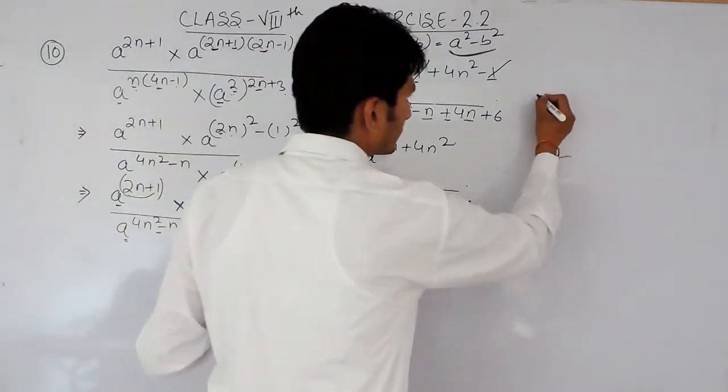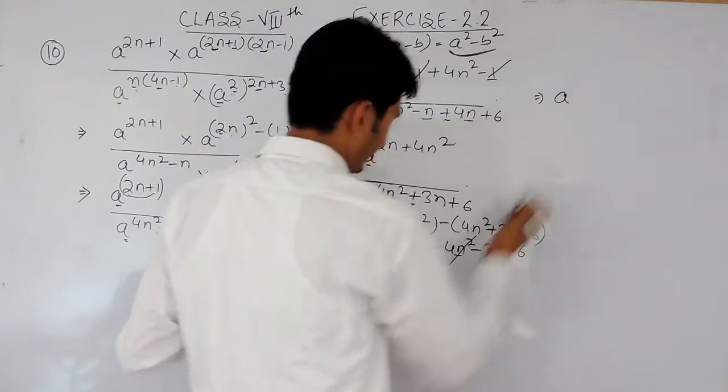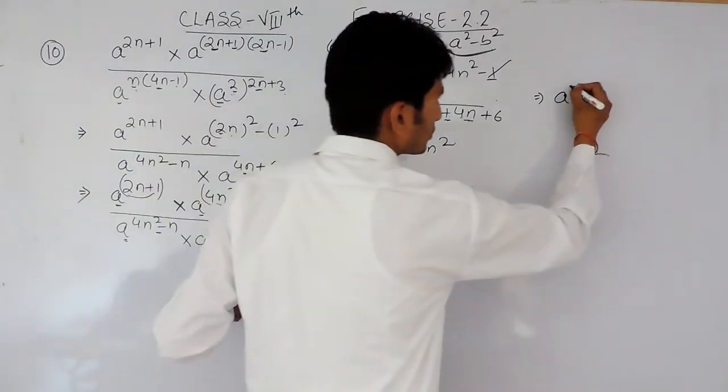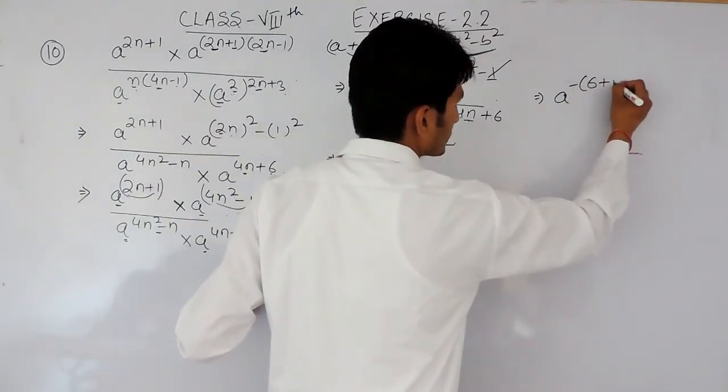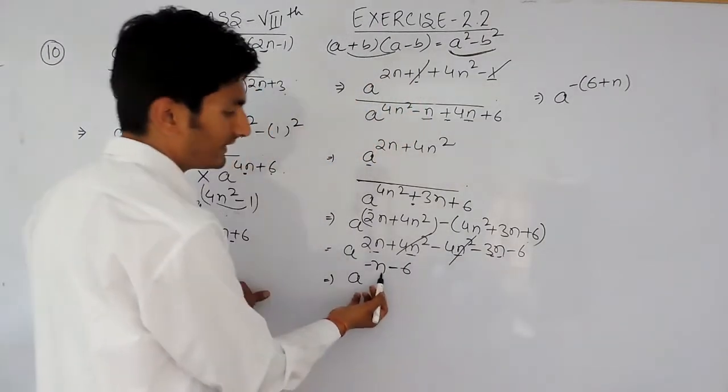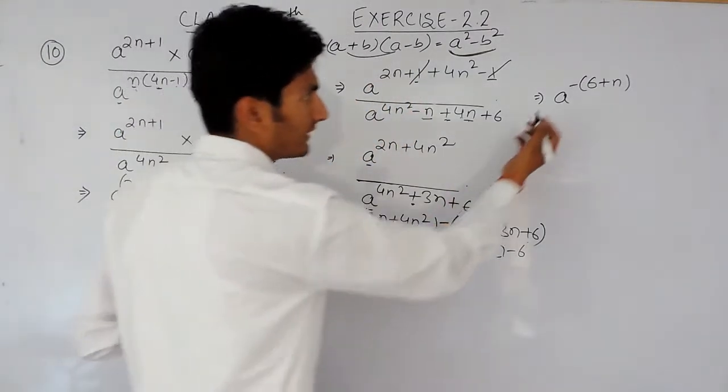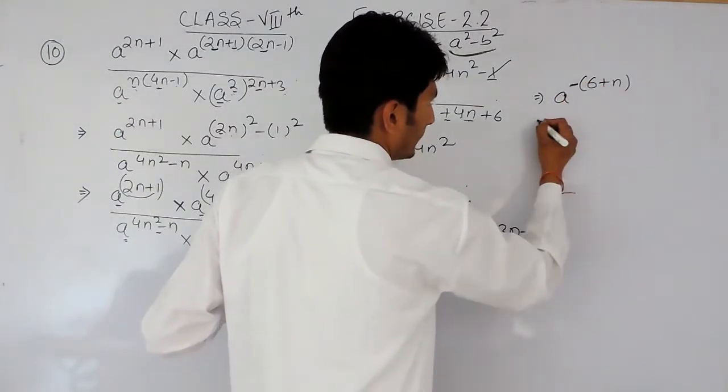Now, if I have to solve this further, if I take minus as common, this will be 6 plus n, or you can write it as n plus 6 because you have taken minus sign common.